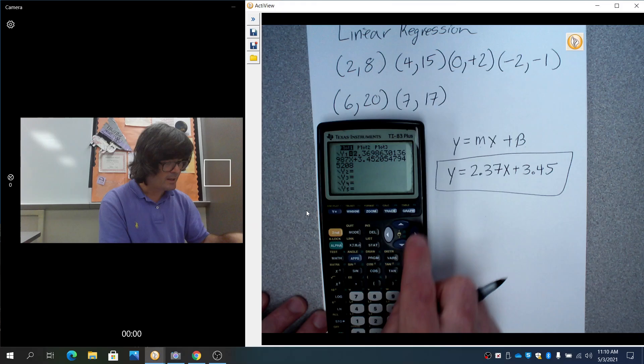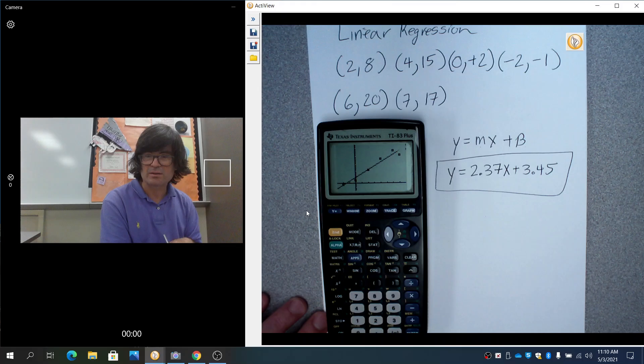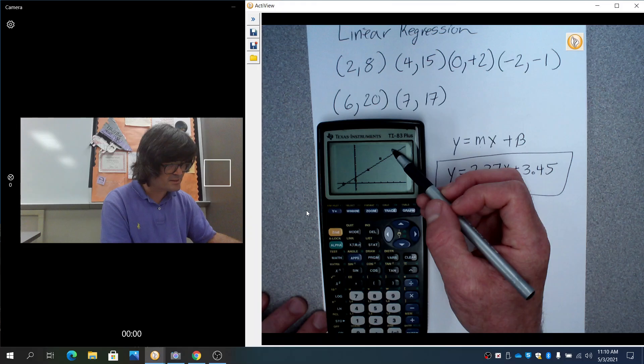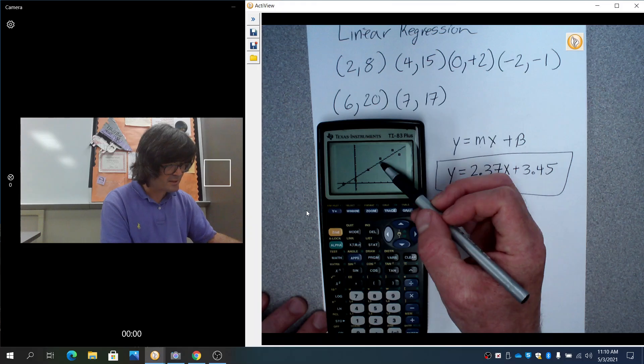And if you look at the graph now, see Y= - they typed that in automatically for me because I had that Y1 there. When you hit GRAPH, that line goes smack through the middle of the points.